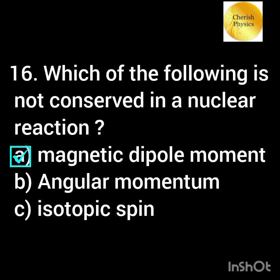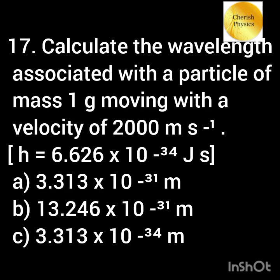Calculate the wavelength associated with a particle of mass 1 gram moving with a velocity of 2000 meters per second. Given: h = 6.626 × 10⁻³⁴ joule-second. Option A: 3.313 × 10⁻³¹ meter. Option B: 13.246 × 10⁻³¹ meter. Option C: 3.313 × 10⁻³⁴ meter.